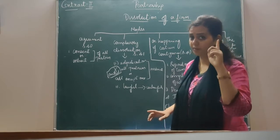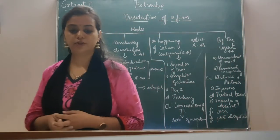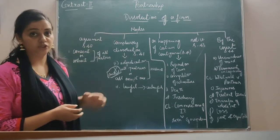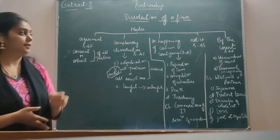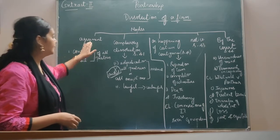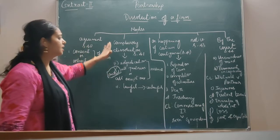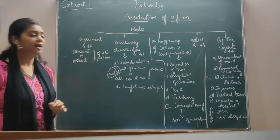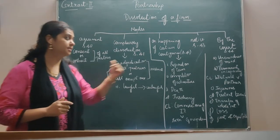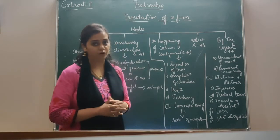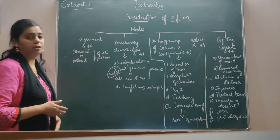Dissolution of a firm means the firm itself is dissolved — there are no partners in the firm at all. Section 39 gives you the modes of dissolution of a firm. There are basically 5 modes: the first is by agreement under Section 40; second is compulsory dissolution under Section 41; third is on happening of certain contingencies under Section 42; fourth is by notice under Section 43; and the last is by the court under Section 44.